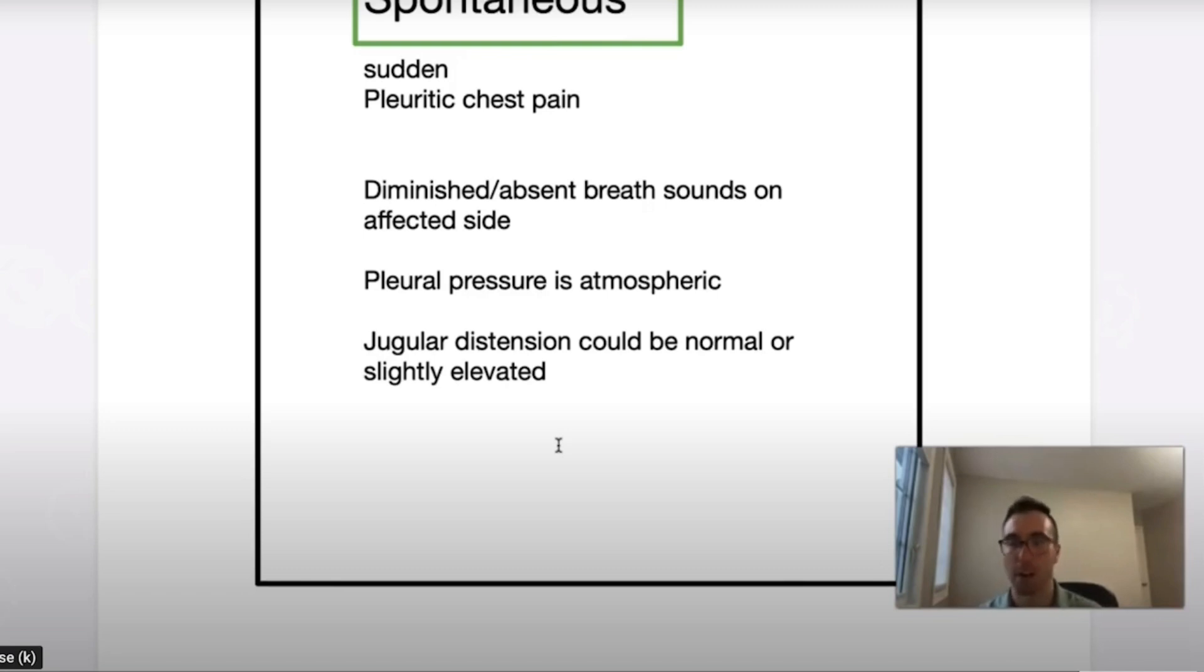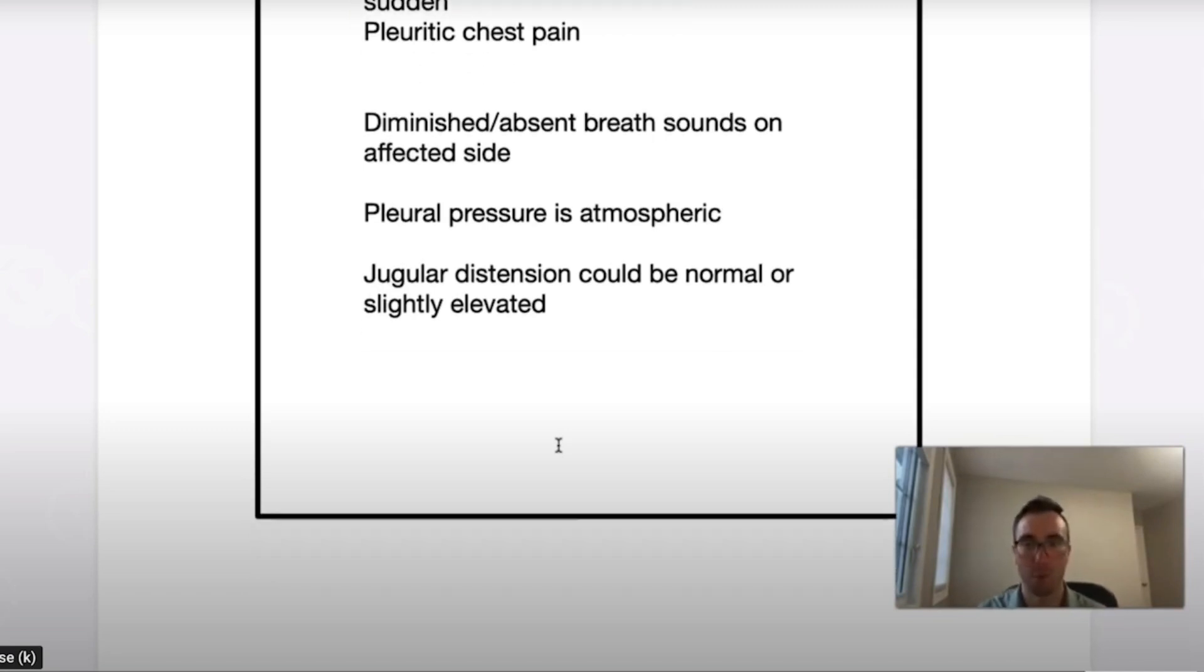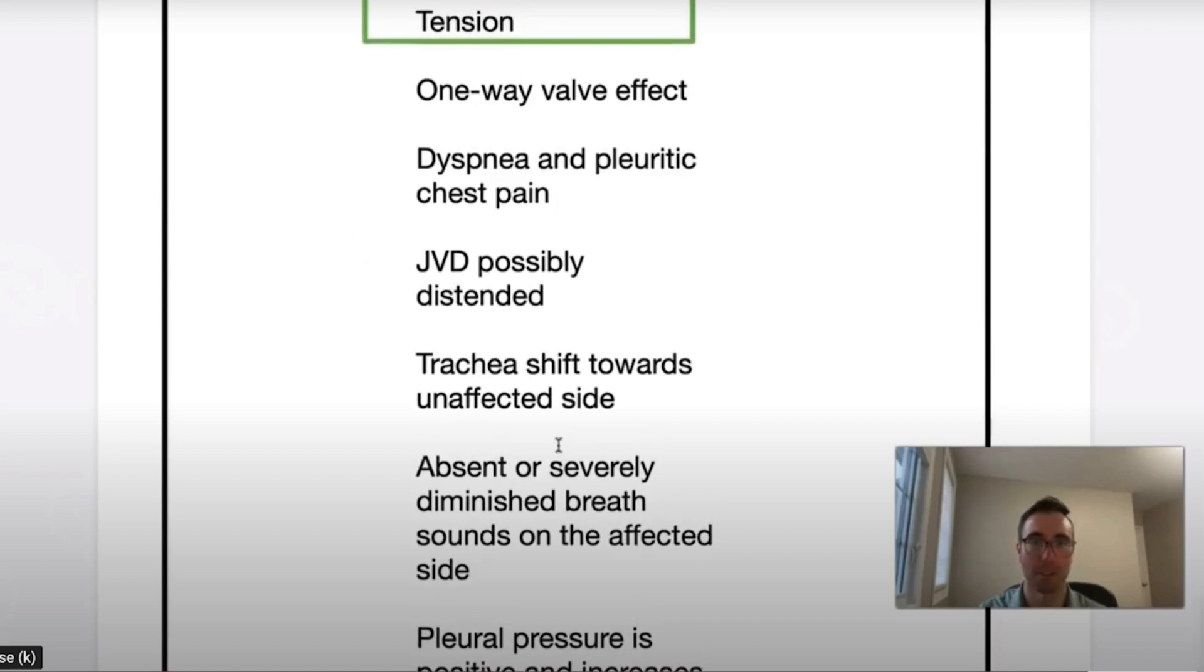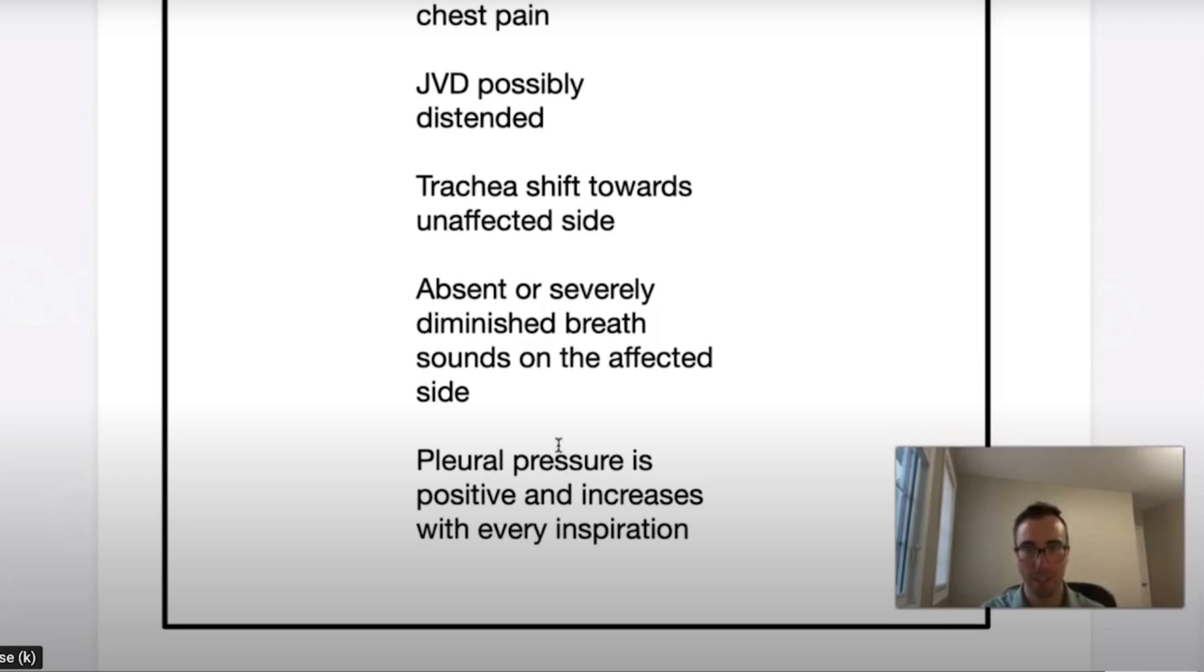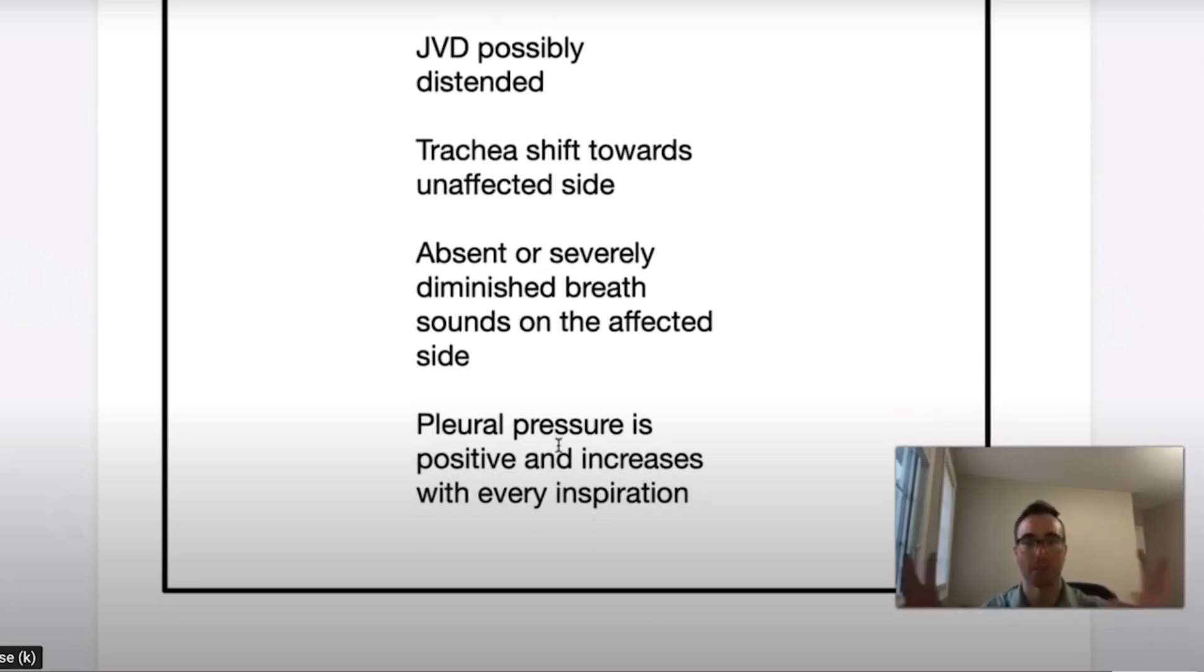Jugular vein distension, again, it's kind of rare. It could be probably normal in a spontaneous pneumothorax or a simple one. It might be elevated, but in comparison, you get this tension one-way valve effect. You get dyspnea, pleuritic chest pain, JVD, possibly distended unless they're truly in hemorrhagic shock as well. You don't have enough volume to create that rise in systemic venous pressure. And you have absent, severely diminished breath sounds on the affected side. And pleural pressure is positive, increases with every inspiration.